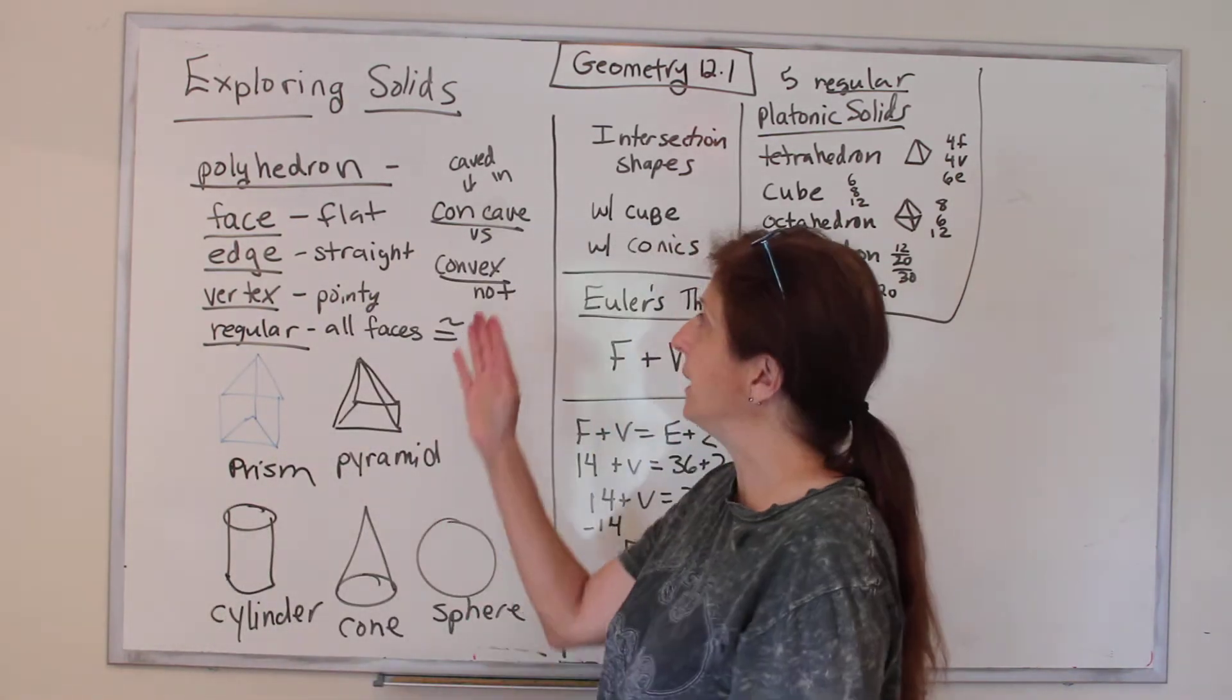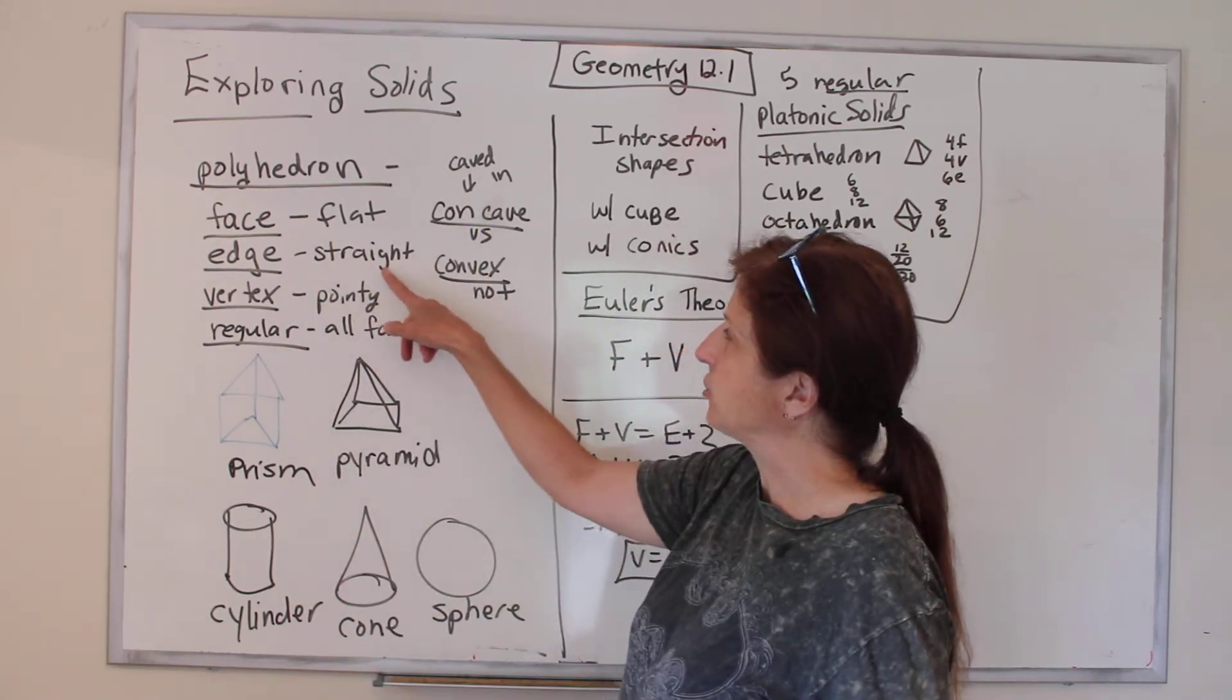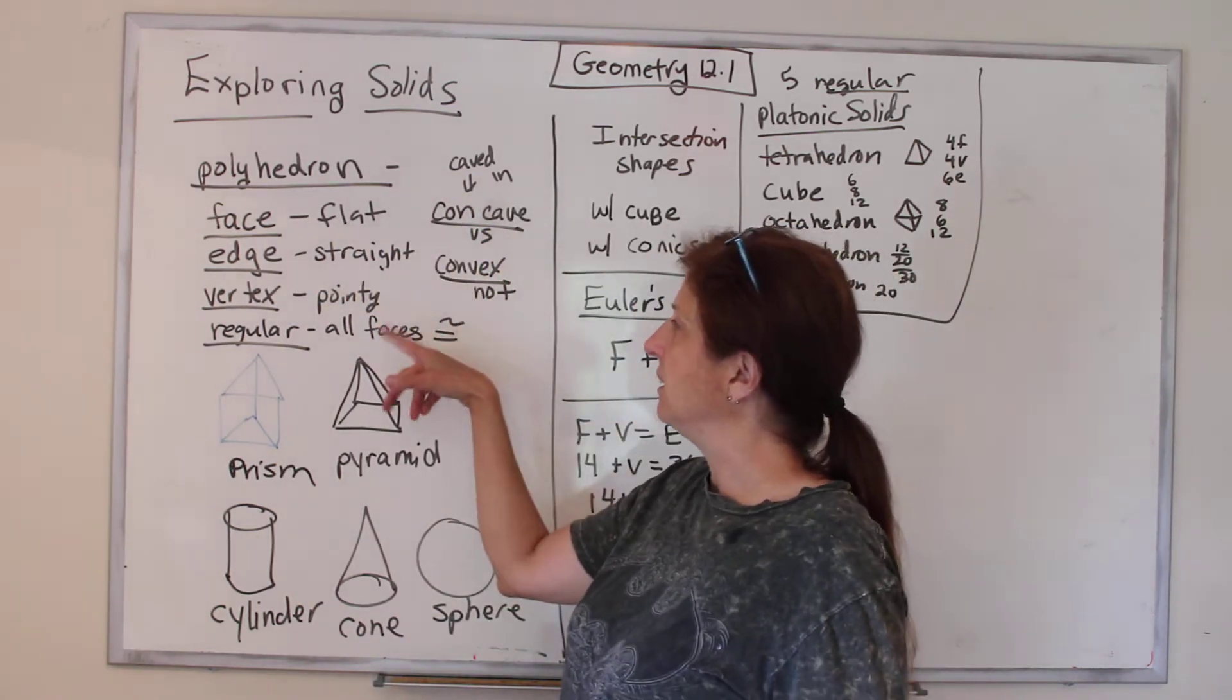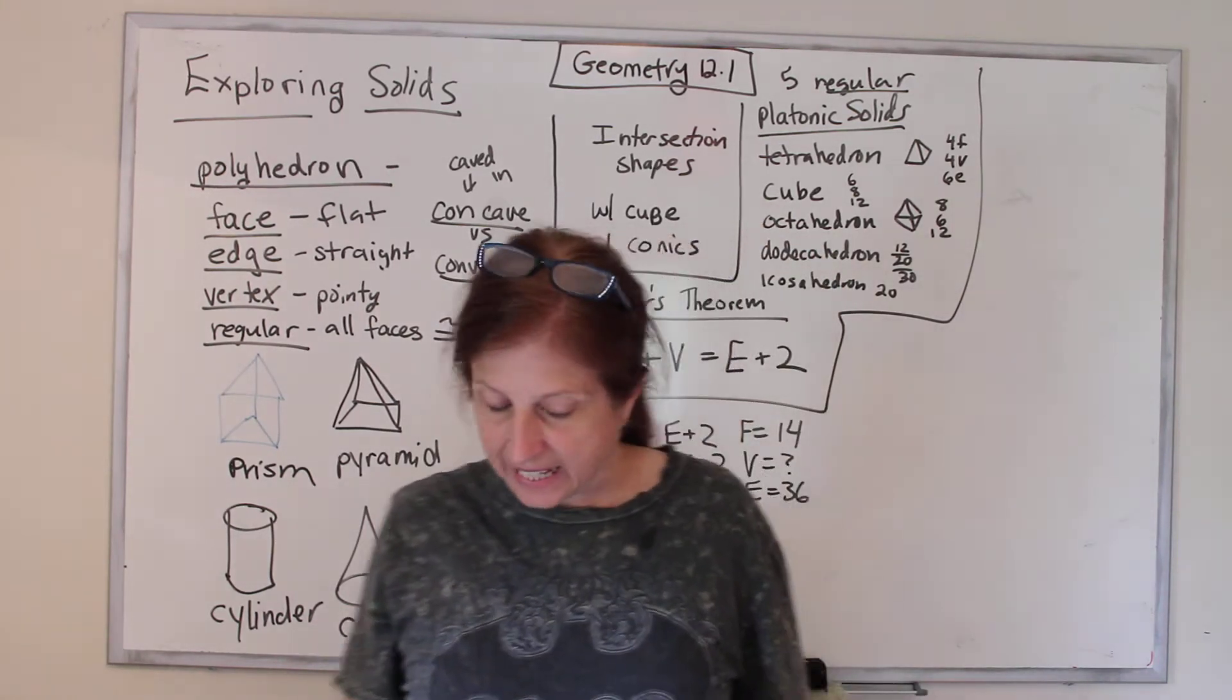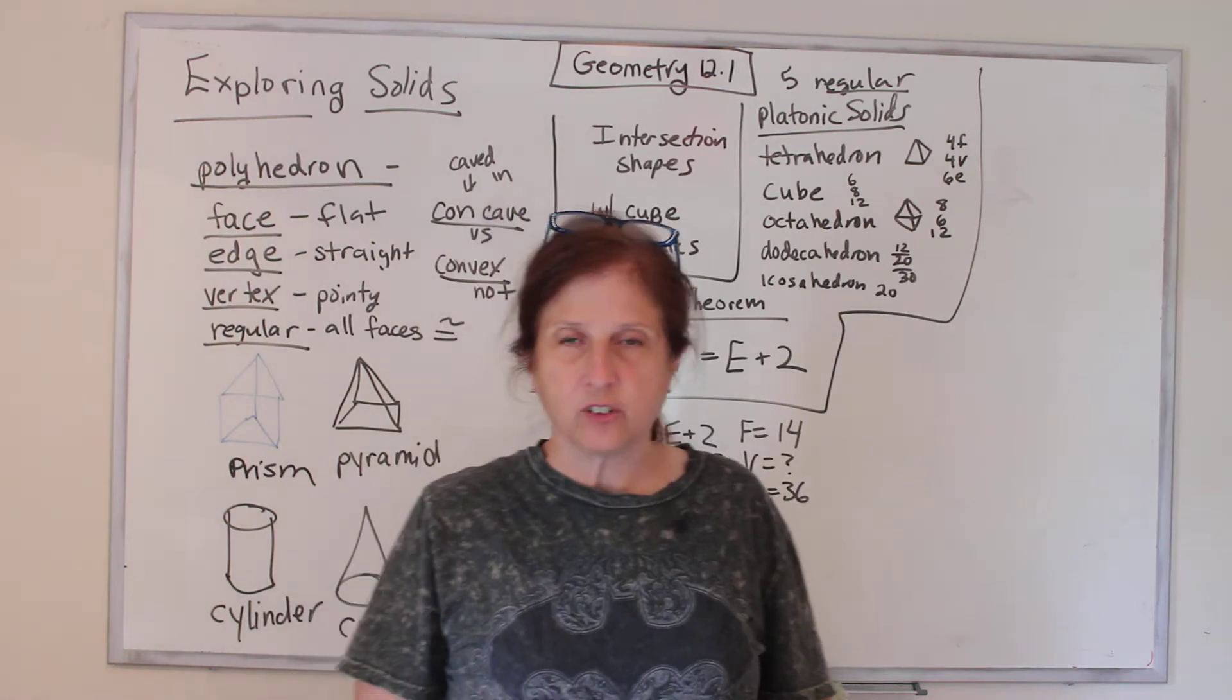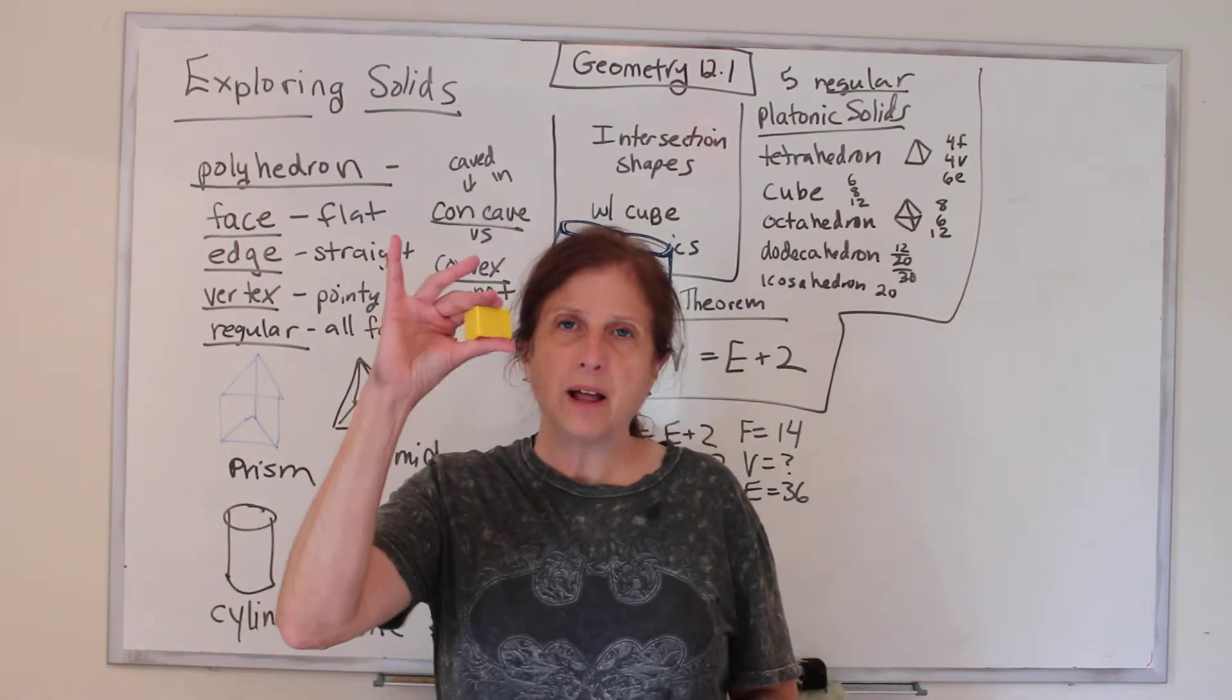All right, so for it to be a polyhedron, all the edges have to be straight, all the faces are flat. So the next question in the book is, is it a polyhedron? Or like Rhett and Link say, will it taco? Will it polyhedron?